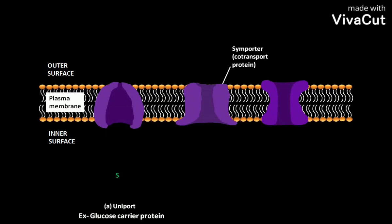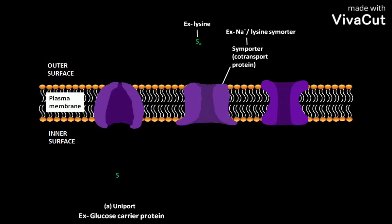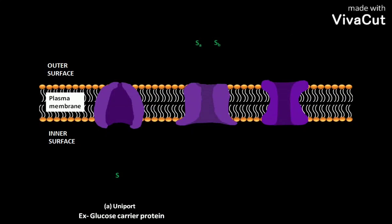A symporter is called a co-transport protein because it can transport two or more different solutes simultaneously. Its example is the Na+ lysine symporter. Here one solute, lysine, denoted as SA, and another solute, Na+, denoted as SB, are transported through this Na+ lysine symporter simultaneously in the same direction.